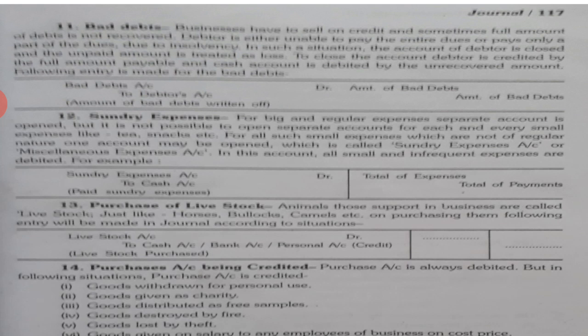Next entry is sundry expenses. Sundry expense is also an expense of business, so all expenses are debited. Therefore, sundry expenses account is debited to cash or to bank — to bank if expenses are paid through bank, to cash account if given in cash. If sundry expenses are done on credit, then the party to whom the business has to pay is credited.